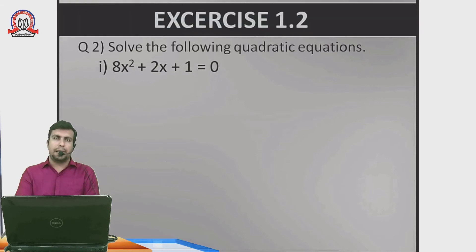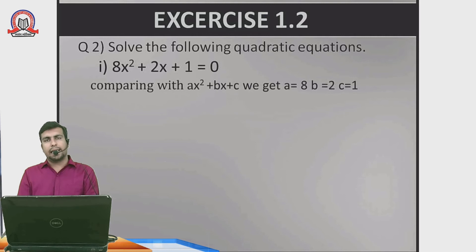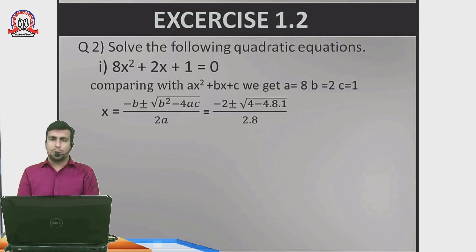Exercise 1.2: Solve the following quadratic equations. Part i: 8x square plus 2x plus 1 equals 0. Comparing with ax square plus bx plus c, we get a equals 8, b equals 2, and c equals 1. Using the formula x equals minus b plus or minus root of b square minus 4ac upon 2a: x equals minus 2 plus or minus root of 4 minus 32 upon 16, which is minus 2 plus or minus root of minus 28 upon 16.